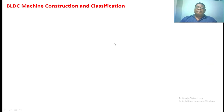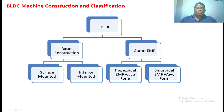Now coming to the classification of the BLDC motor. The BLDC motor can be classified into two types based upon how we place the permanent magnets on the rotor and the nature of the back EMF in the stator winding — that is, the rotor construction and stator EMF. Based on rotor construction: surface mounted BLDC motor and interior mounted rotor type BLDC motor. Based on stator EMF: trapezoidal EMF waveform BLDC motor and sinusoidal EMF waveform BLDC motor.